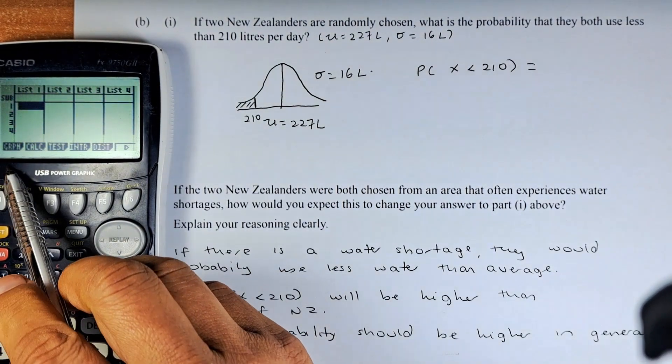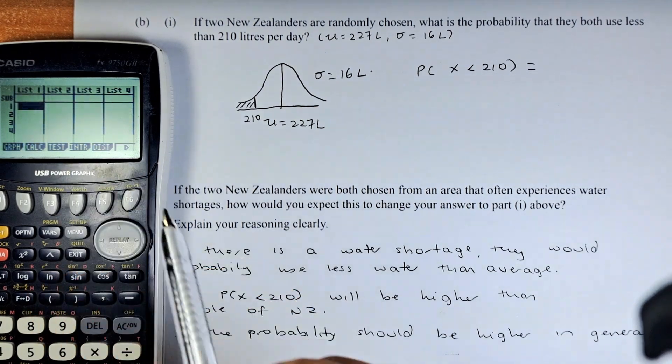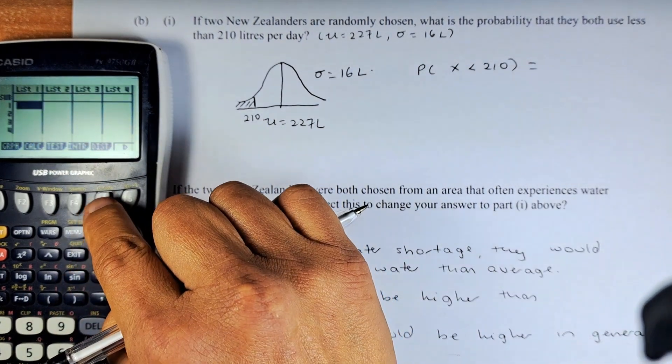Now there are graph, calculate, test, interval, and distribution. We are going to do distribution. So F5 is the distribution.